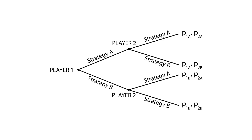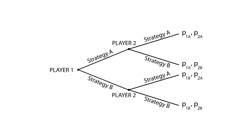Let's see a couple of examples. If player 1 chooses strategy A, player 2 will know that the only two possible outcomes are the upper ones. Let's say player 2 chooses strategy B — then the final payoffs are P1A and P2B. Let's see another example. If player 1 chooses strategy B, player 2 will know that the only two possible outcomes are the lower ones. Let's say player 2 chooses strategy B — then the final payoffs are P1B and P2B.